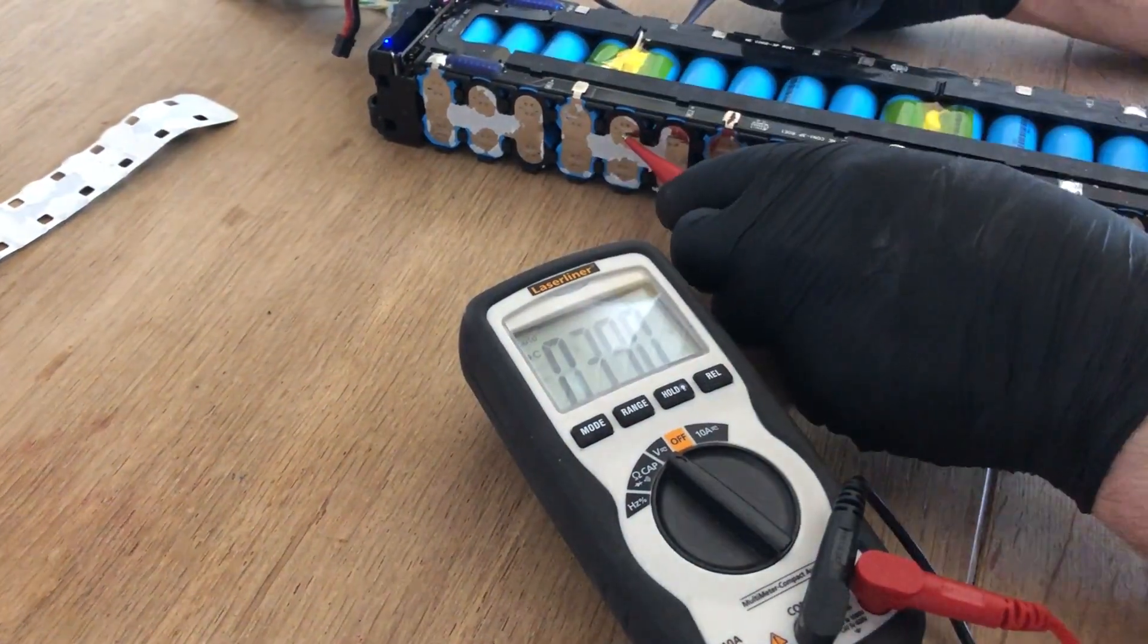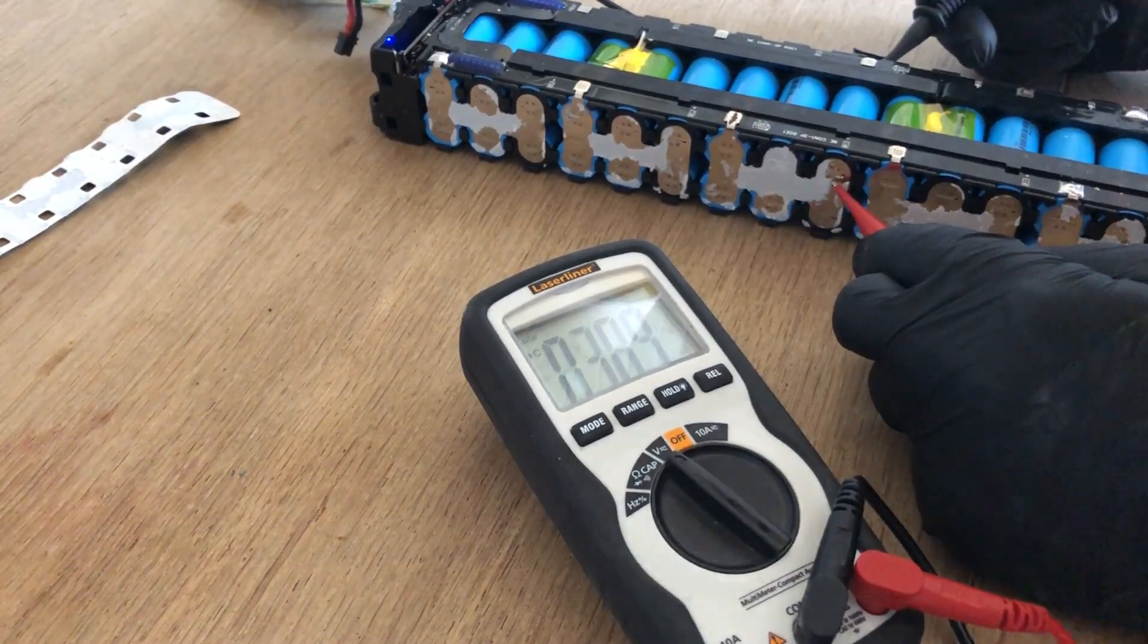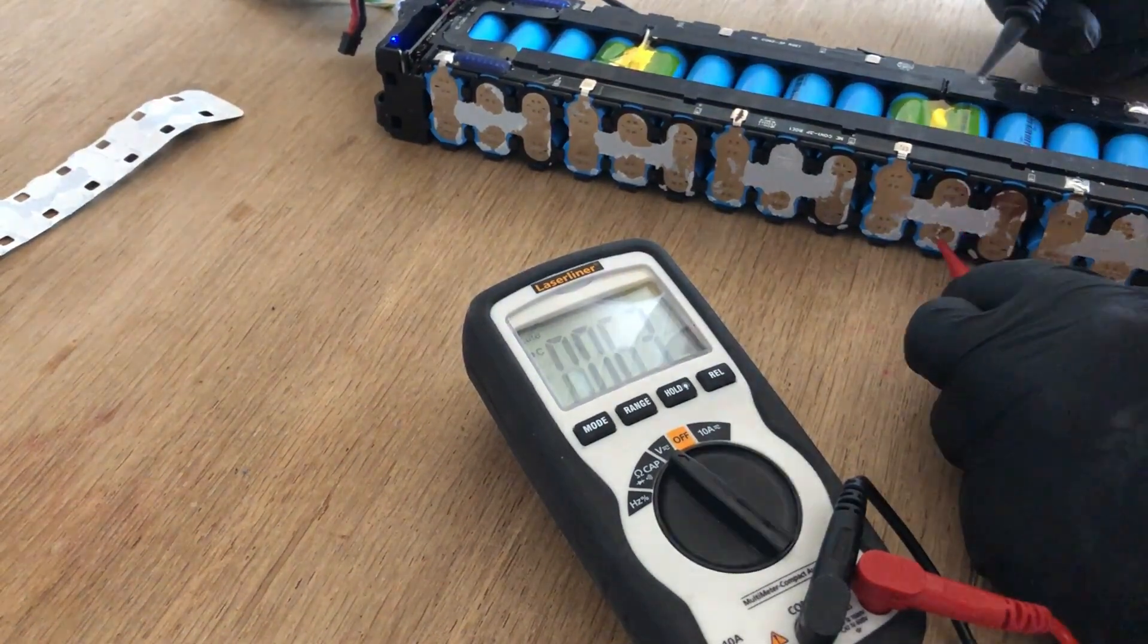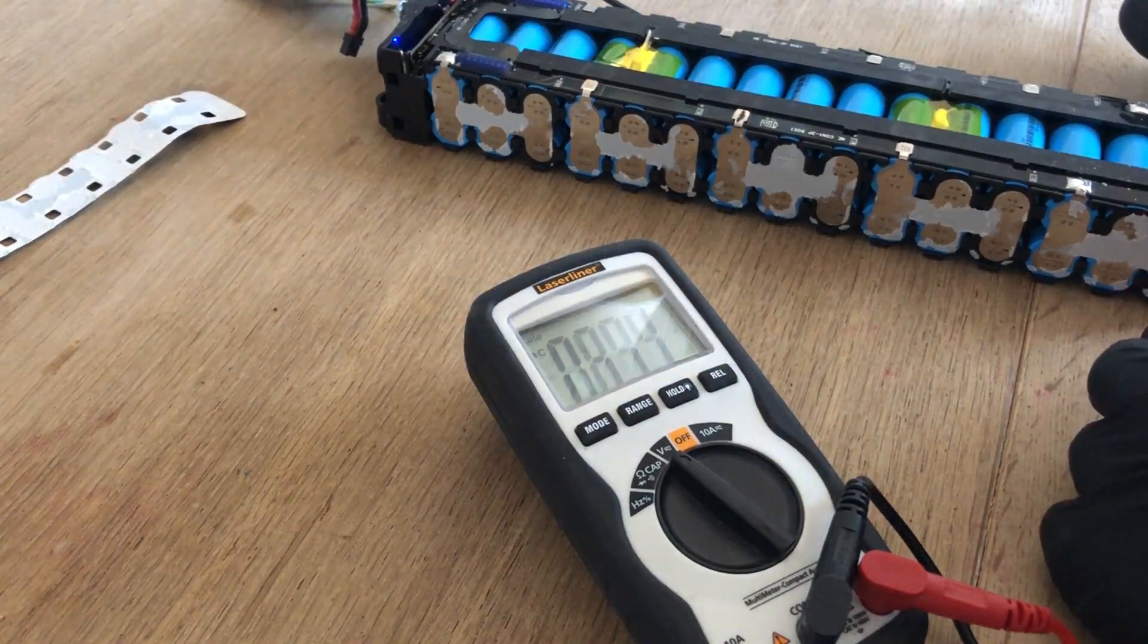After inspecting all the contacts and finding them alright, and measuring the voltages and finding them also right, the next thing that could be wrong was BMS.